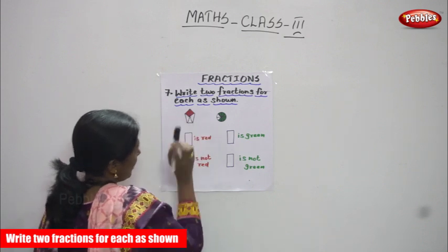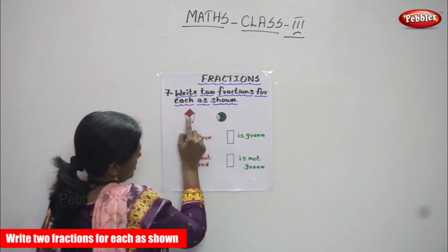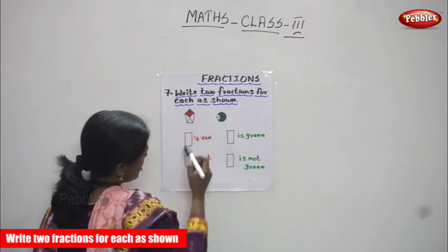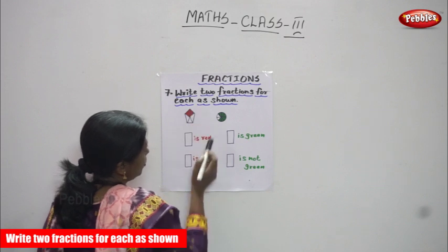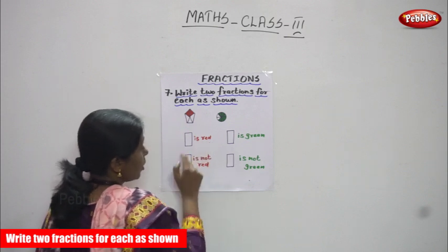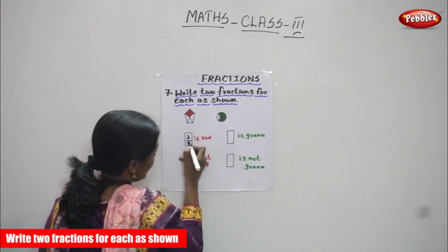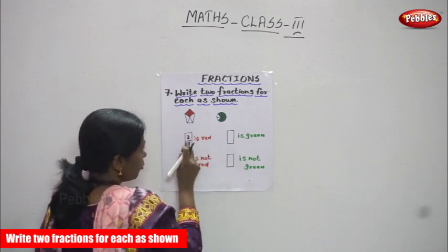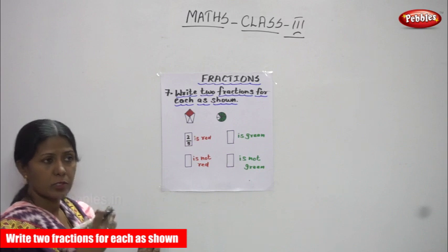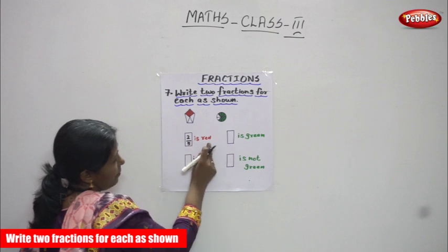The pentagon has 1, 2, 3, 4, 5 parts. How many parts are shaded? I cut this diagram into five parts — first, second, third, fourth, fifth part. But I shaded only two parts in red color. So, 2 by 5 is red in color.